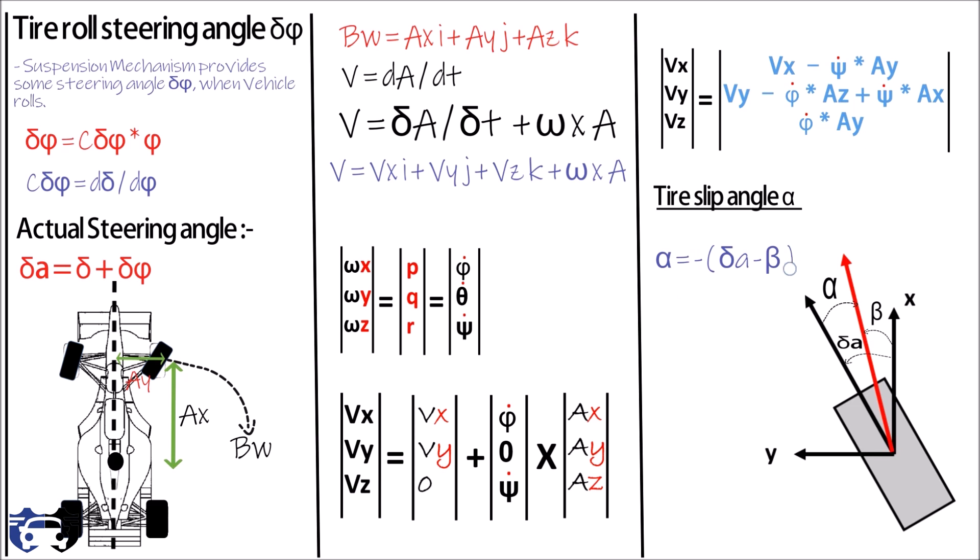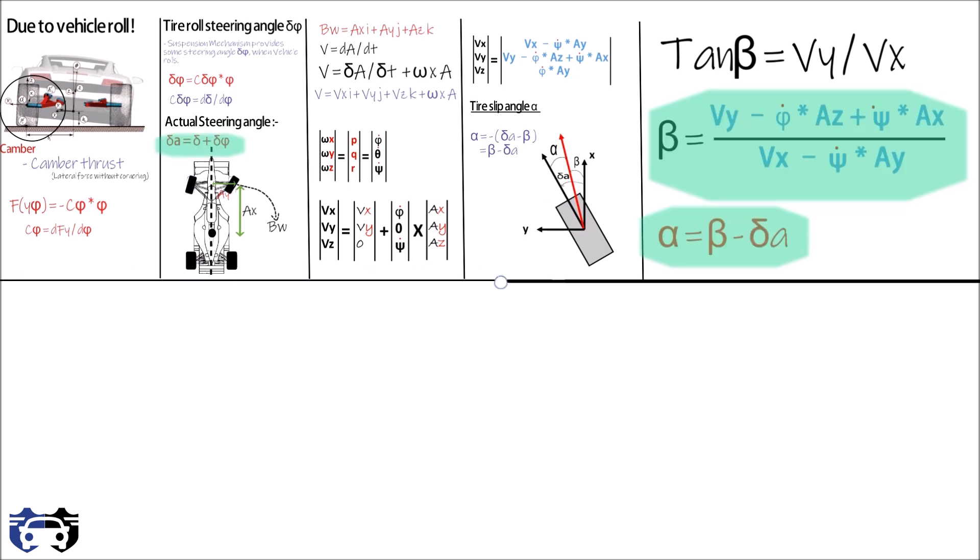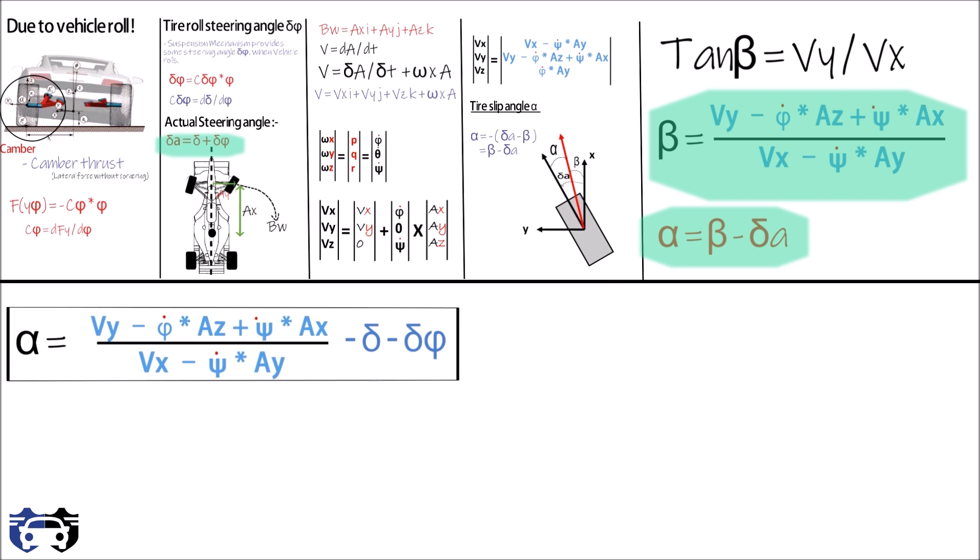Which gives us alpha equals beta minus delta_A. Here tan(beta) is given by ratio of velocity in Y direction to velocity in X direction. So for a small angle, beta can be approximated as this. We know alpha equals beta minus delta_A. On solving these we get the following value of slip angle alpha of the tire.